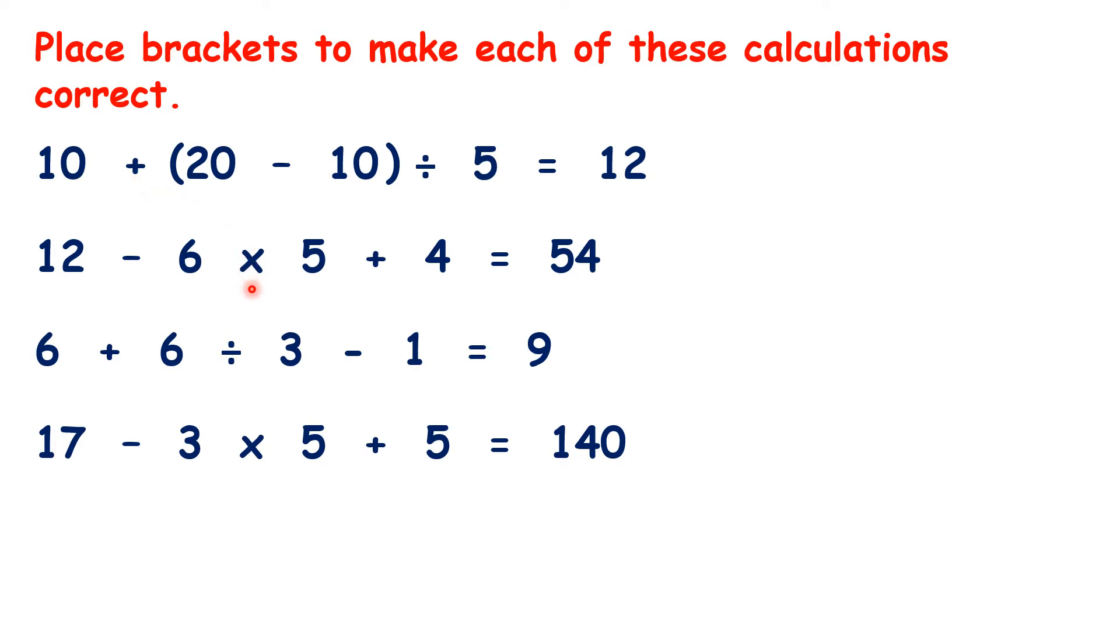Now, for this next question, we need 2 pairs of brackets. We need brackets around 12 minus 6 to get 6. But we also need brackets around 5 plus 4 to get 9, because 6 times 9 is 54.